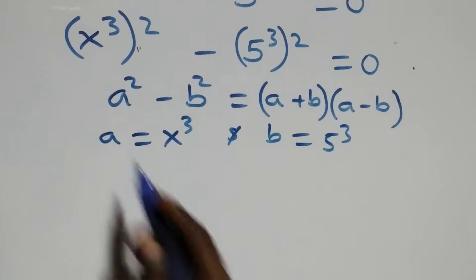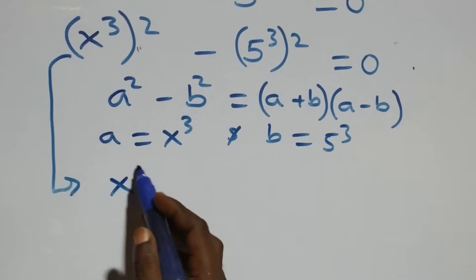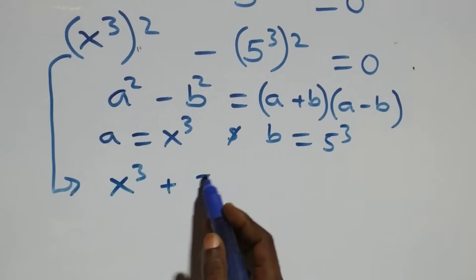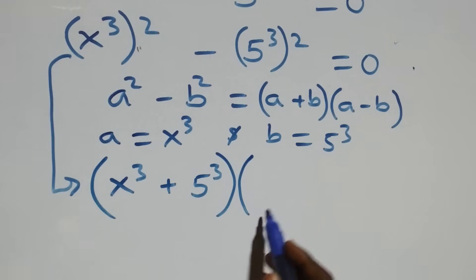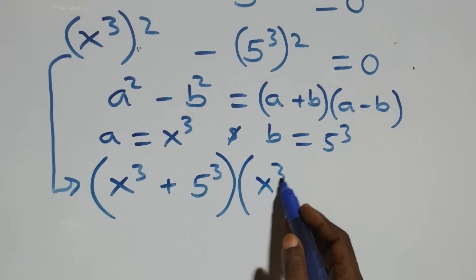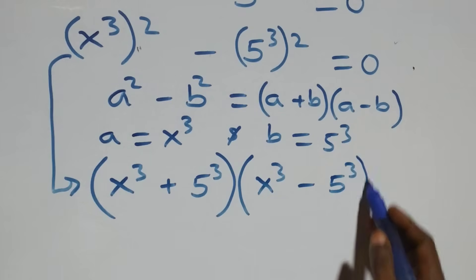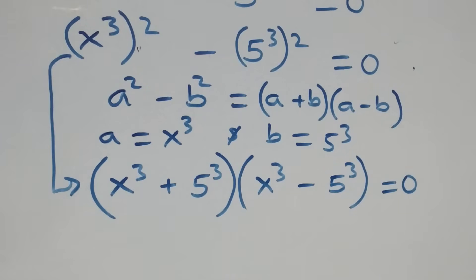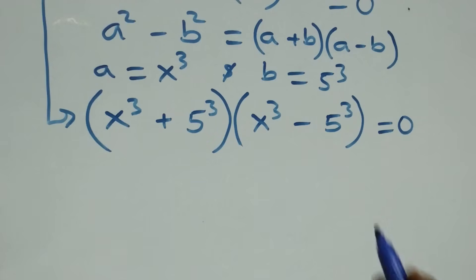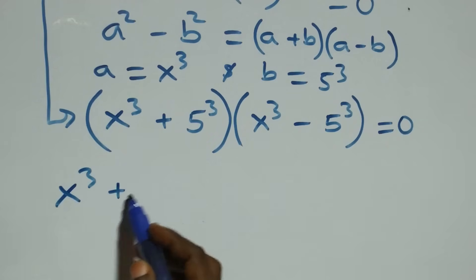So what we have becomes x raised to power 3 plus 5 raised to power 3, in brackets, times x raised to power 3 minus 5 raised to power 3, close brackets, equals to 0. From here we have two possible cases: x raised to power 3 plus 5 raised to power 3 equals to 0.